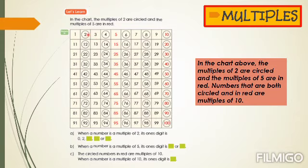2, 4, 6, 8, 10, 12, 14, 16, 18, 20, 22, 24, 26, 28, 30, up to 100. These are multiples of 2.